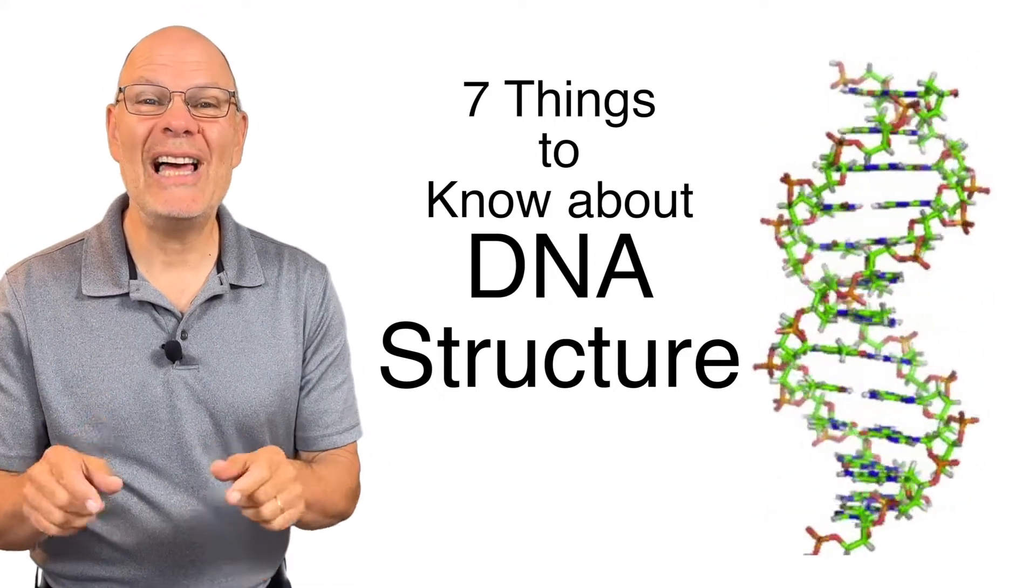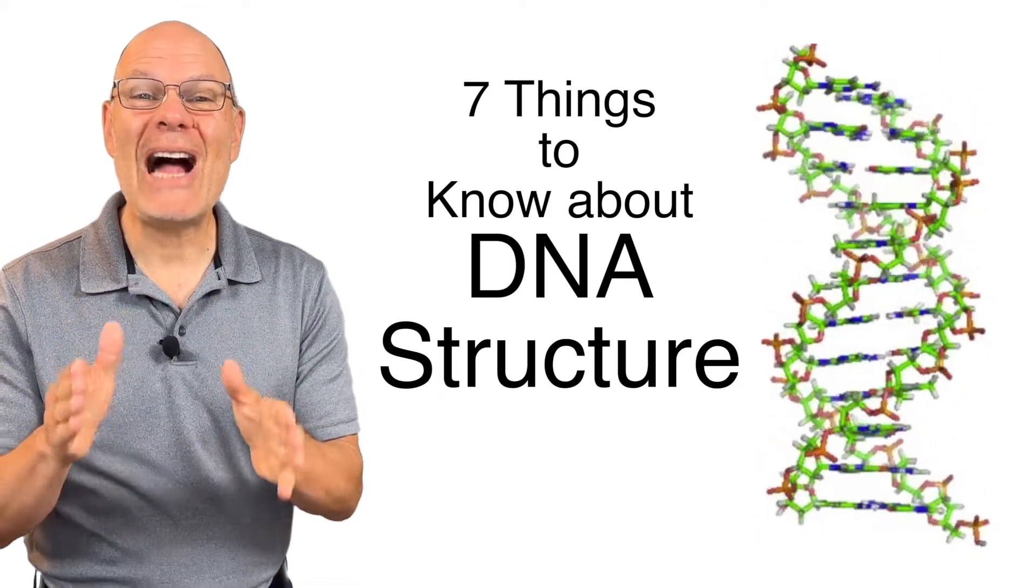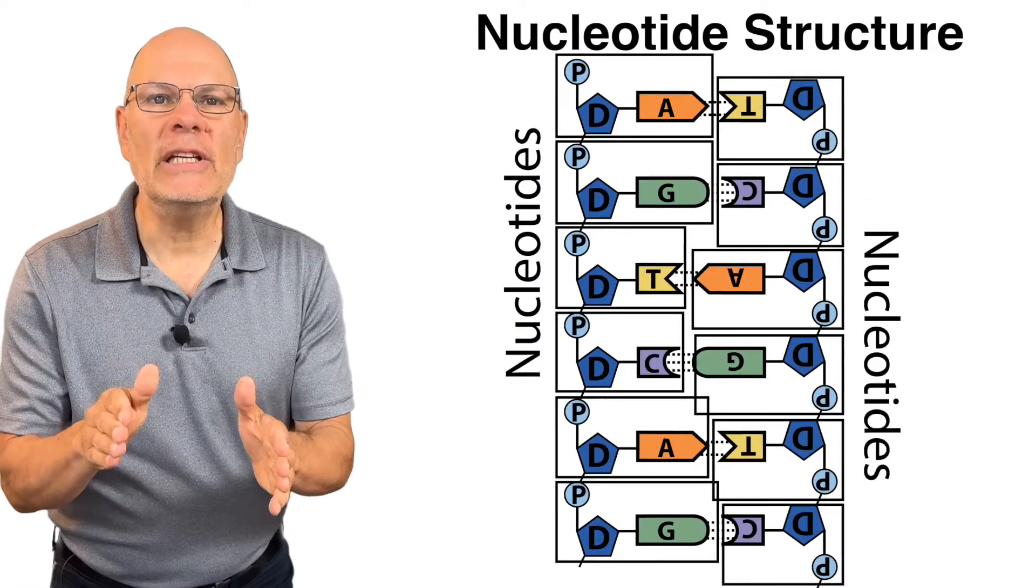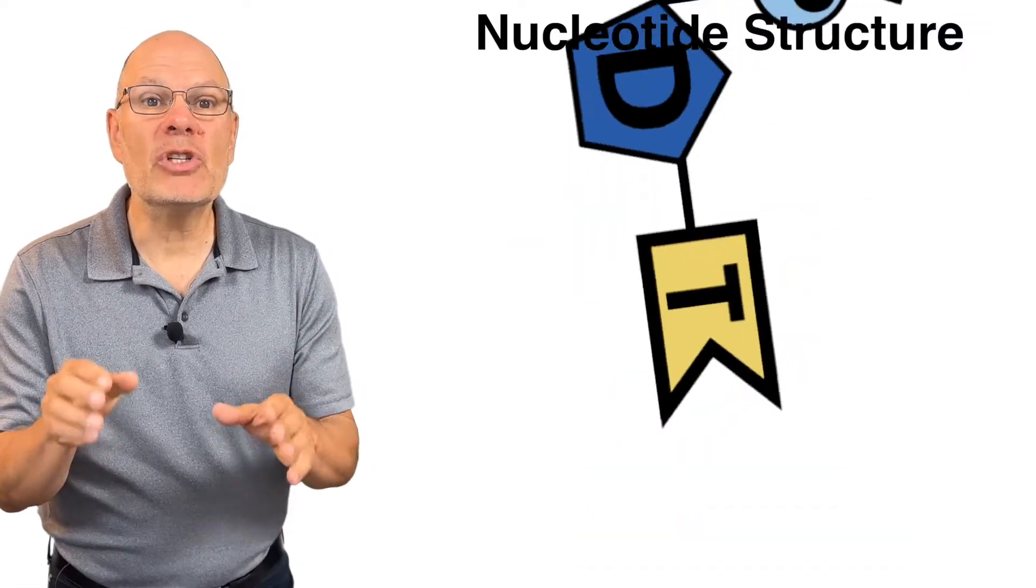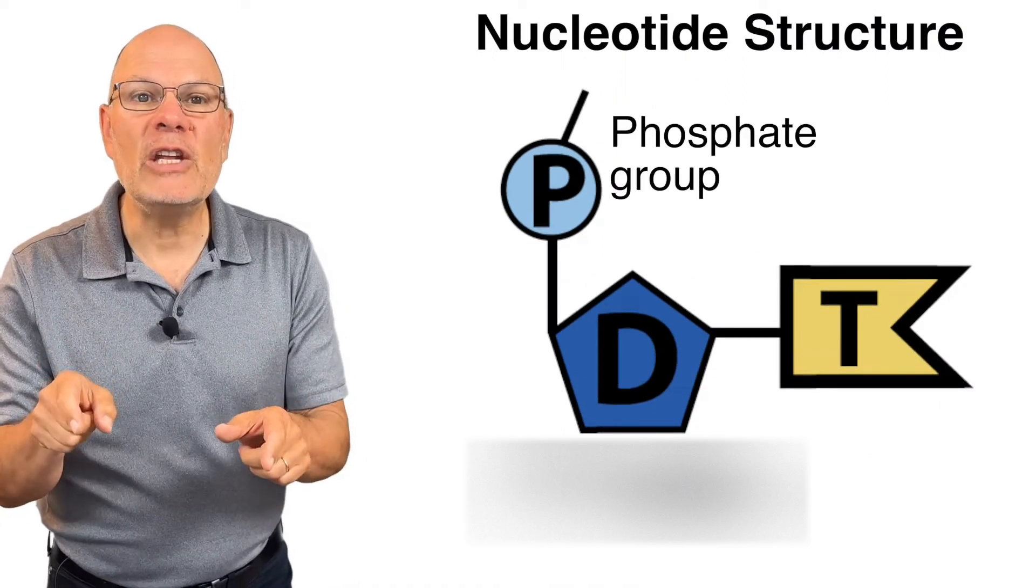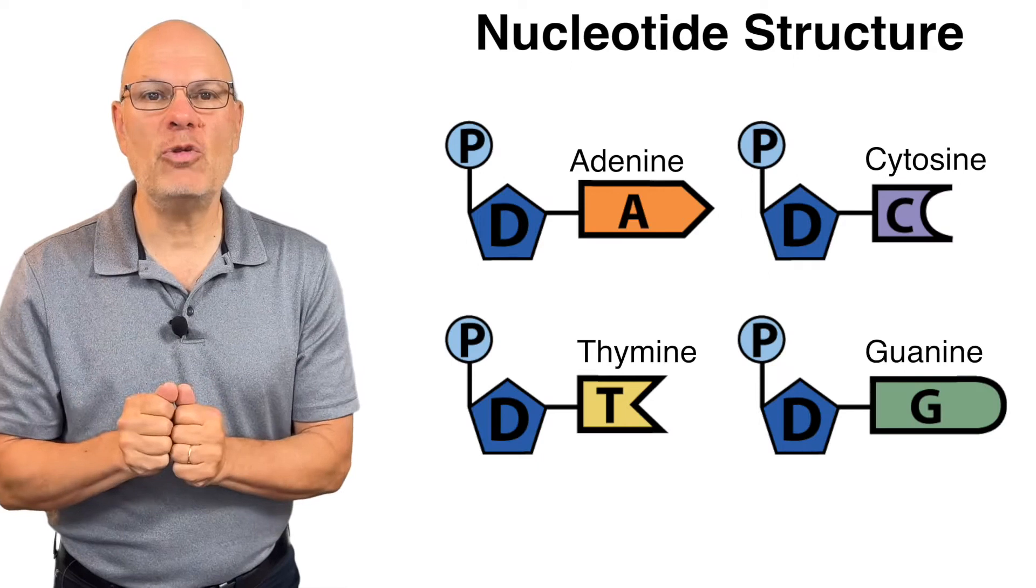To crush it in your biology class, there are seven things you've got to know about DNA structure. One, DNA is built from nucleotides. These DNA monomers consist of a five-carbon sugar called deoxyribose, a phosphate group, and one of four nitrogenous bases.